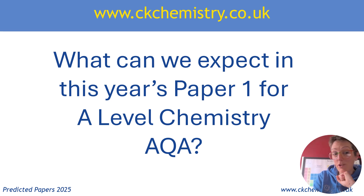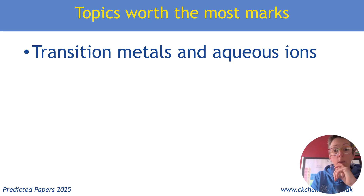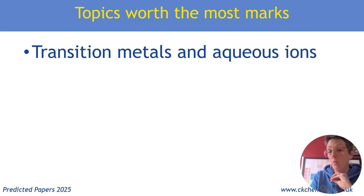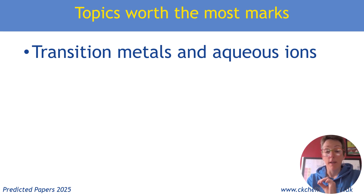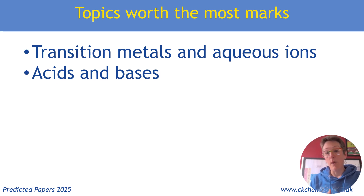Remember, these are predictions — please make sure that you do as much revision as you can. Topics worth the most marks in Paper 1 for AQA: transition metals and aqueous ions, every single year, are worth loads of marks, so please revise them thoroughly. Along with acids and bases — so we're talking pH calculations for weak acids, strong acids, strong bases — make sure you know your Kw and also mixtures and buffers.